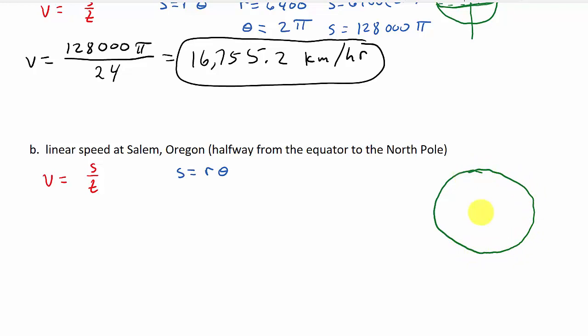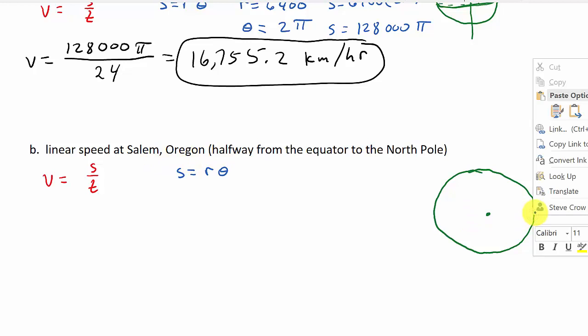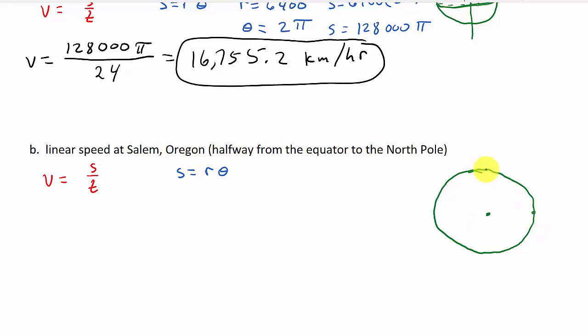Here's the center. And the equator would go right through here. But it tells us that Salem, Oregon is halfway between the equator and the North Pole. So it would be somewhere about right in here. And we know that this distance here is 6400.